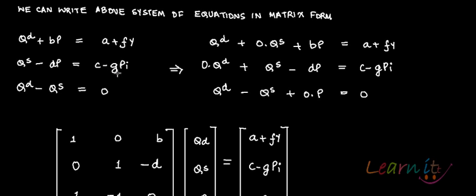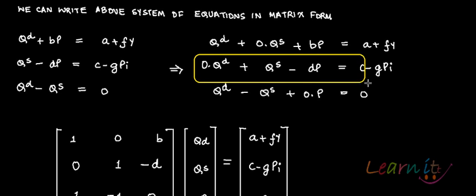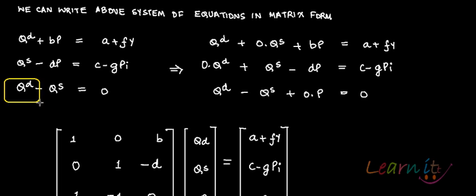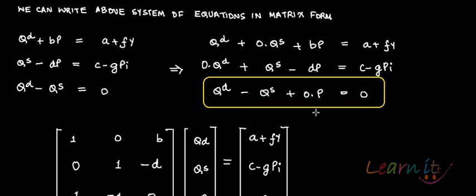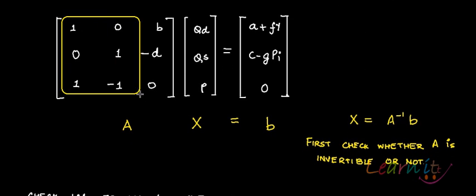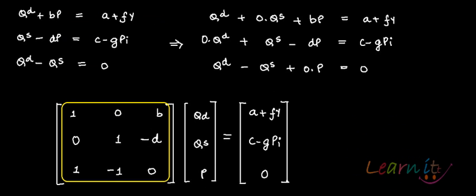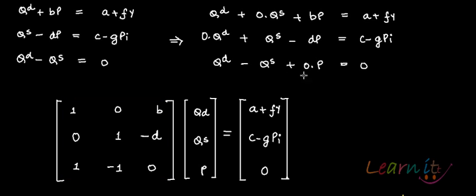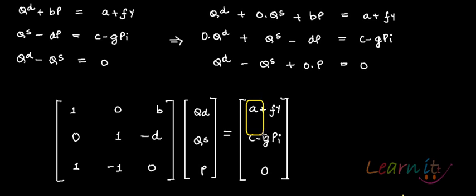The second equation becomes 0·QD plus QS minus DP equals C minus GPI, since there is no QD term. The third equation QD minus QS equals 0 can be written as QD minus QS plus 0·P equals 0, since there is no P term. We then form the coefficient matrix, the column vector of variables, and the matrix of exogenous variables.